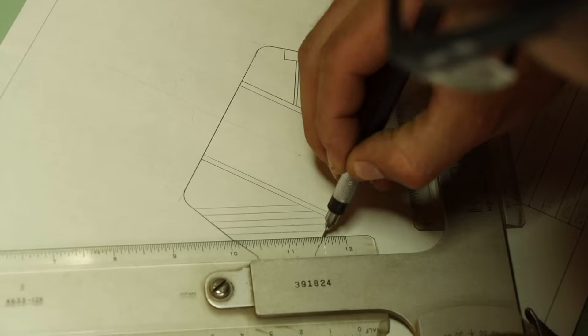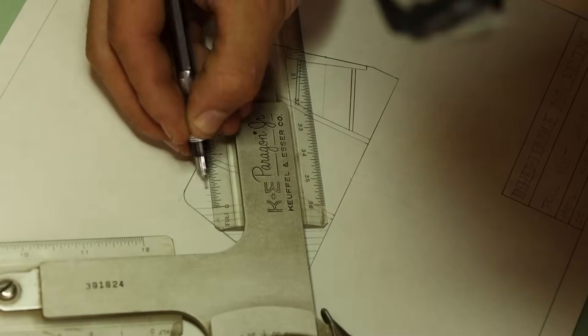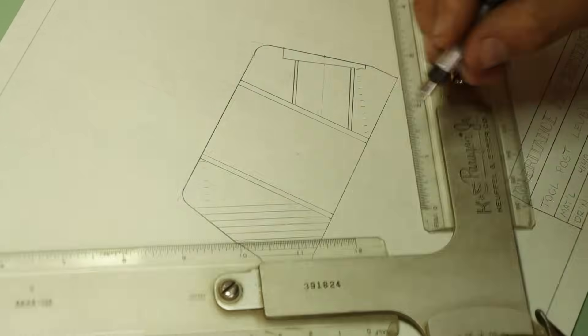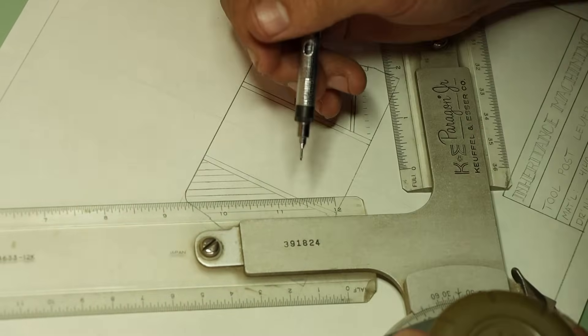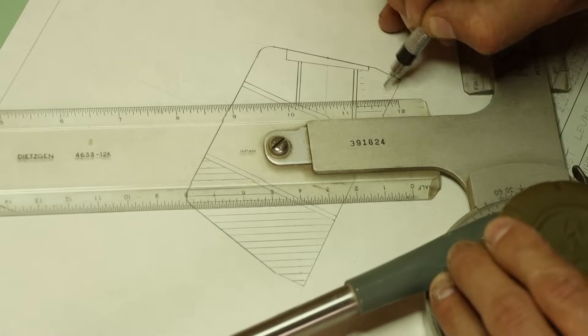This view will be at a 2 to 1 scale, so the details will be easier to see in dimension. And as customary for a section view, I'll include crosshatching to represent where solid material was sliced. Tasks like this are where the drafting machine really shines. It makes drawing this multitude of parallel lines so much faster.